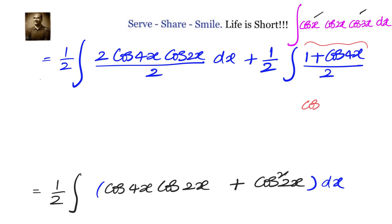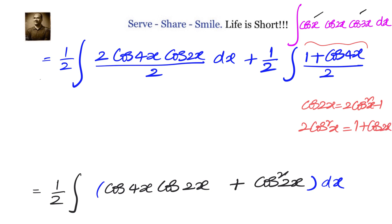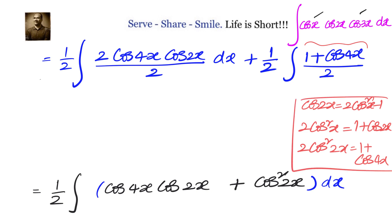To understand the identity used: cos 2x = 2cos²x − 1, which gives 2cos²x = 1 + cos 2x. Scaling the angle, we get 2cos²2x = 1 + cos 4x. That is the identity we applied for cos²2x.